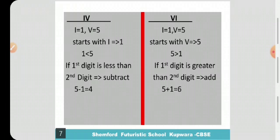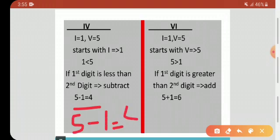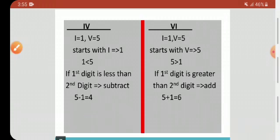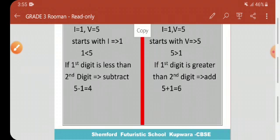Let's again look at how we are going to write the number 4. I equals 1, V equals 5. It starts with I equals 1, and 1 is lesser than 5. If first digit is less than second digit, then we have to subtract them. That means 5 minus 1 equals 4. Here, for 6: VI starts with V representing 5, and I represents 1. If first digit is greater than second digit, then we have to add the values. That is 5 plus 1 equals 6.